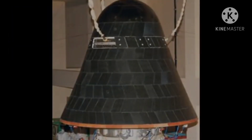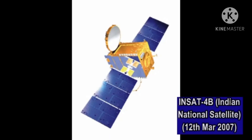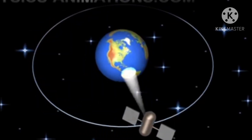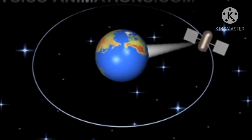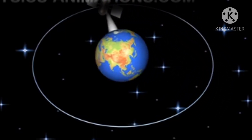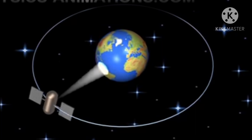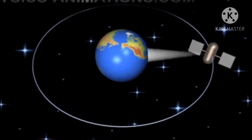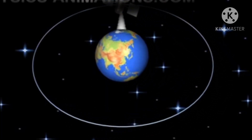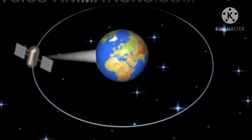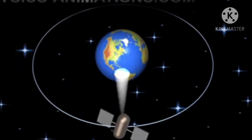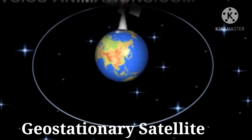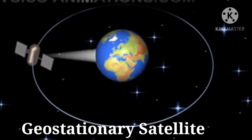The satellites that make it possible to have a live view of an event in any part of the world are very special satellites. They take as much time to complete one orbit around the Earth as the time taken by the Earth to complete one rotation on its axis. Scientists refer to them as geostationary satellites.